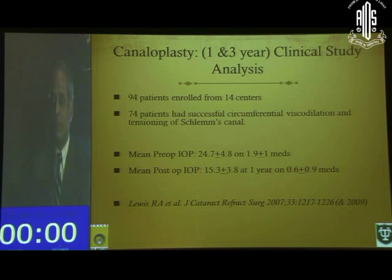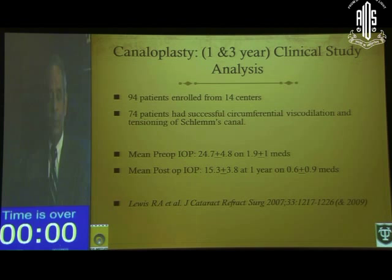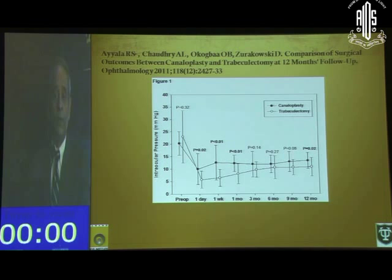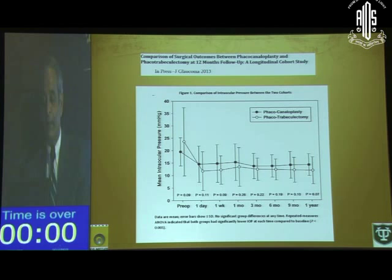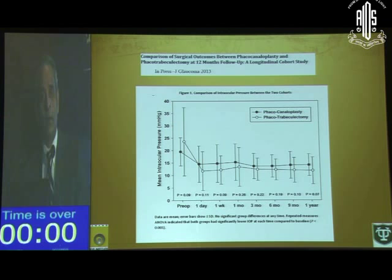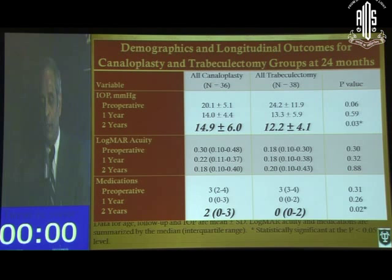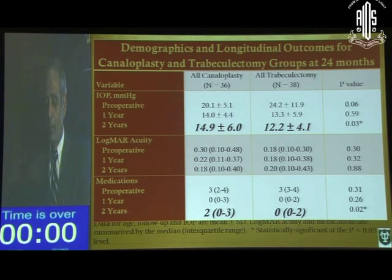FDA-purpose studies on canaloplasty show mean IOP dropped to approximately 15.3 ± 3 mmHg on one or fewer medications, compared to 24.7 mmHg pre-operatively. Studies from our own group comparing canaloplasty with trabeculectomy showed 13.8 mmHg in the canaloplasty group versus 12 mmHg in the trabeculectomy group. A study comparing phacoemulsification+canaloplasty with phacoemulsification+trabeculectomy at one-year follow-up showed 14 mmHg versus 12.2 mmHg respectively. A 24-month follow-up confirmed similar results: 14 versus 12.2 mmHg.